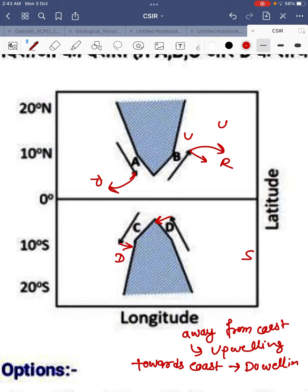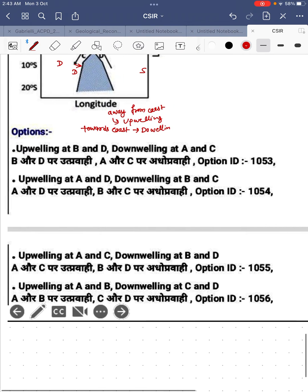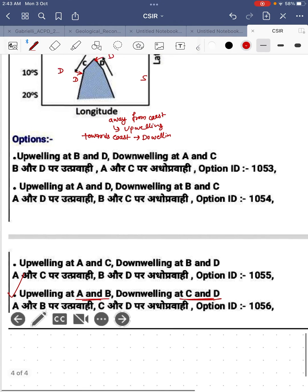So here we can say that this is upwelling, this is upwelling, and this is downwelling, this is downwelling. According to that, option 4 is correct: upwelling at AB and downwelling at CD, which is the official answer key.